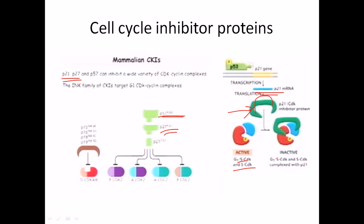When p21 binds the active site of cyclin-dependent kinases, the CDK will stop working and that is how it stalls the cell cycle in a particular phase. I call p53 the master among all controlling proteins because p53 controls the transcription of the p21 gene. Not only does p53 control transcription of p21, but also p27 and p57 genes, which have similar effects during the cell cycle.